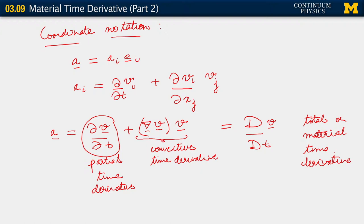The best way to remember all of this is that this is simply the derivative of V with respect to time. If you want to write it this way, you need to remember that what you're holding fixed is not little x, but capital X. They're all equivalent — it's just a matter of remembering what we are parametrizing things by.